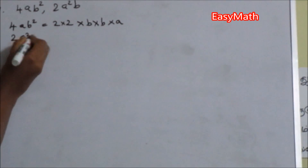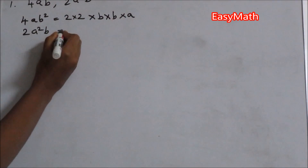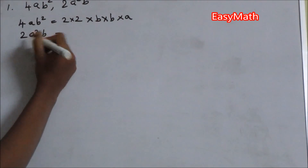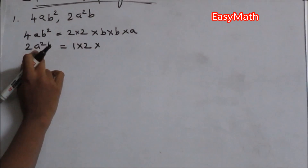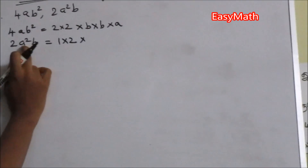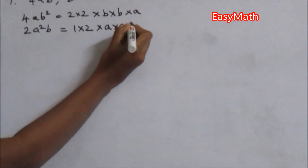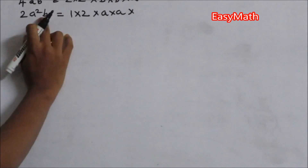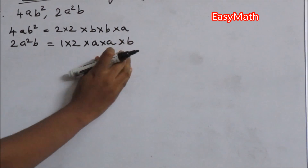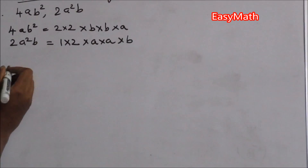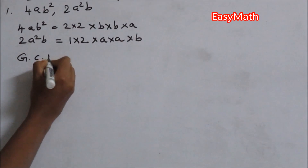Now 2a²b — we expand this as 1 × 2. The power of a is 2, so we expand it as a × a. The power of b is 1, so we write b.